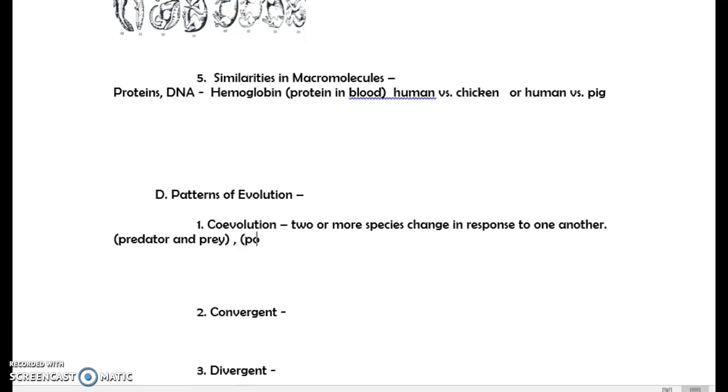Other examples are pollinators and the flowers. They somewhat evolve together as well. Some flowers are built specifically for pollinators. If one changes, the ones that change with it or the ones that had the mutation, you can't necessarily just will yourself to change. That's hopefully something to recognize things have to happen by chance. Nature has to select certain characteristics now in a new environment, all those things. So that's co-evolution.